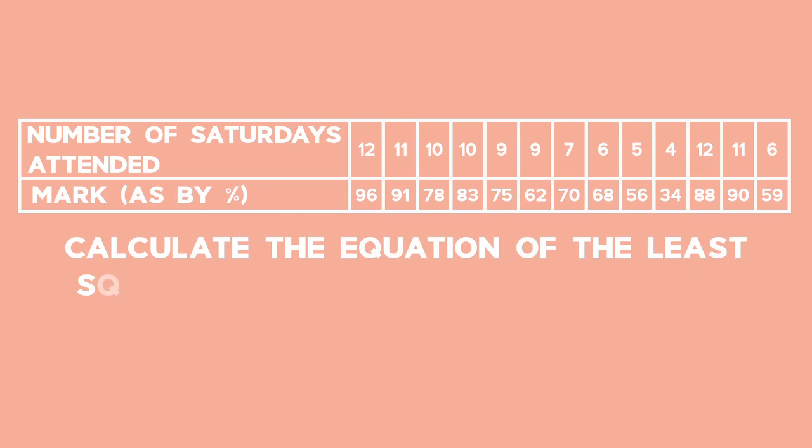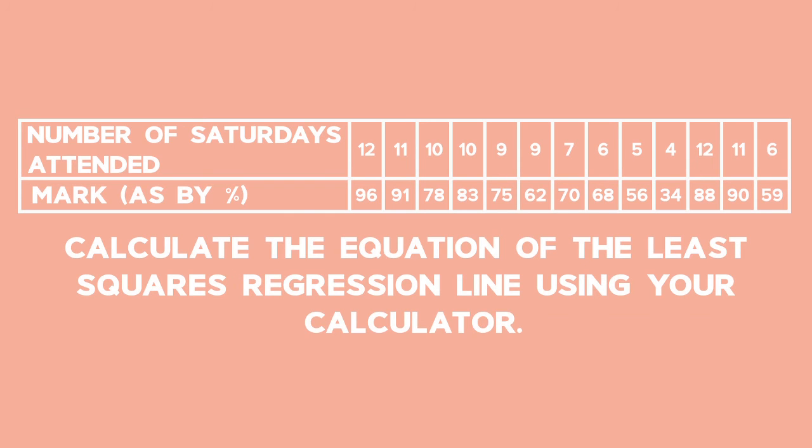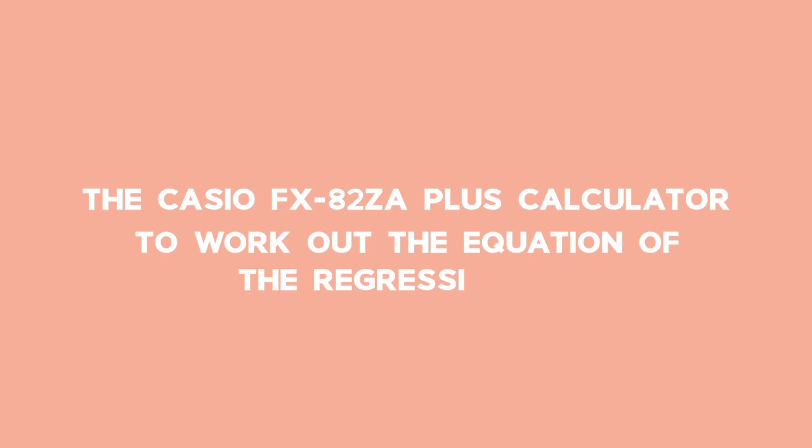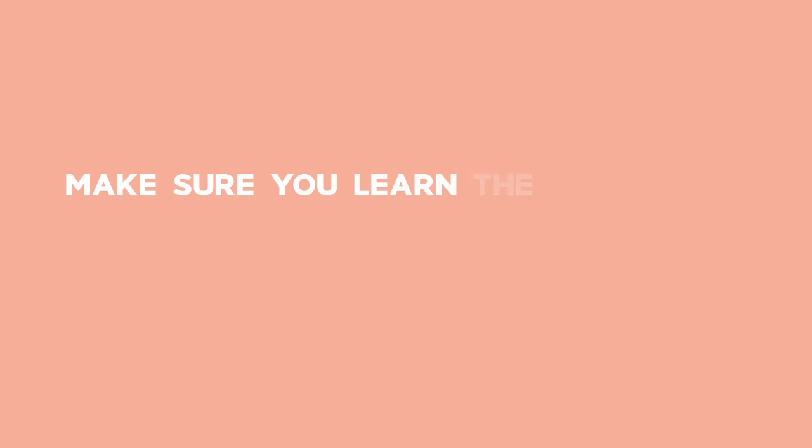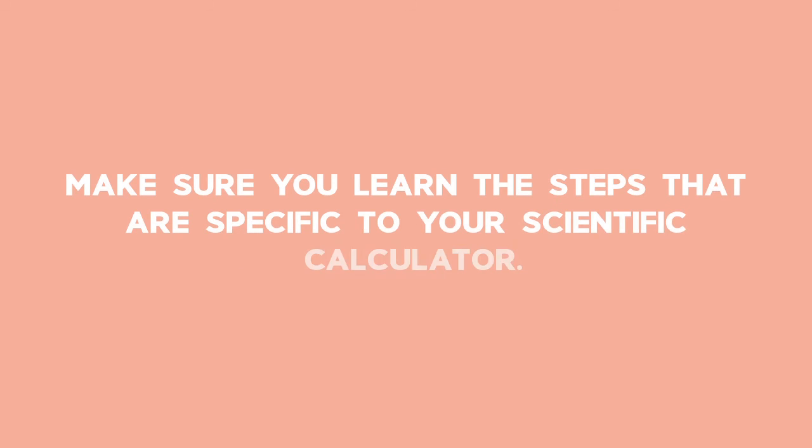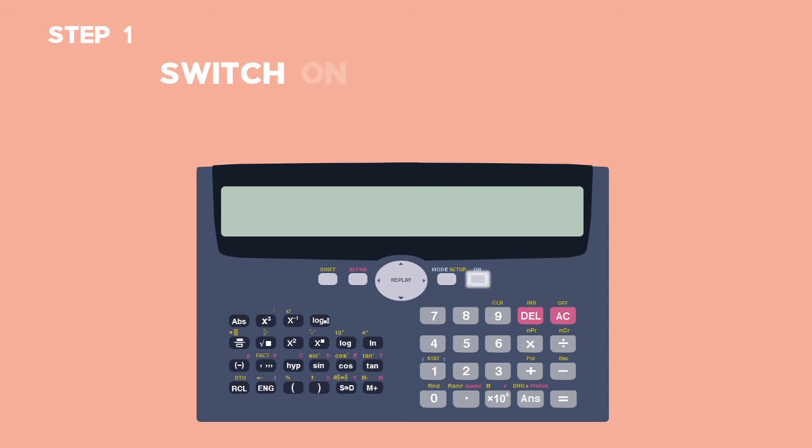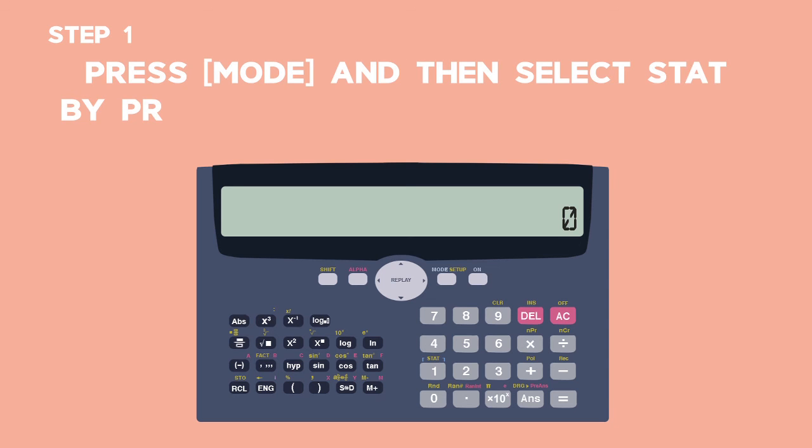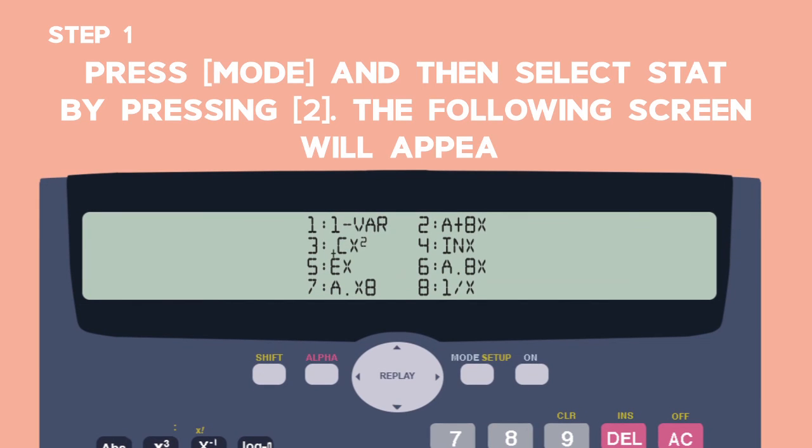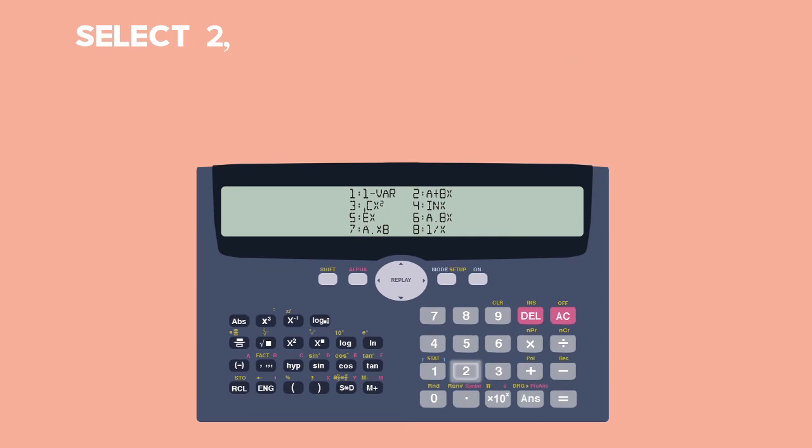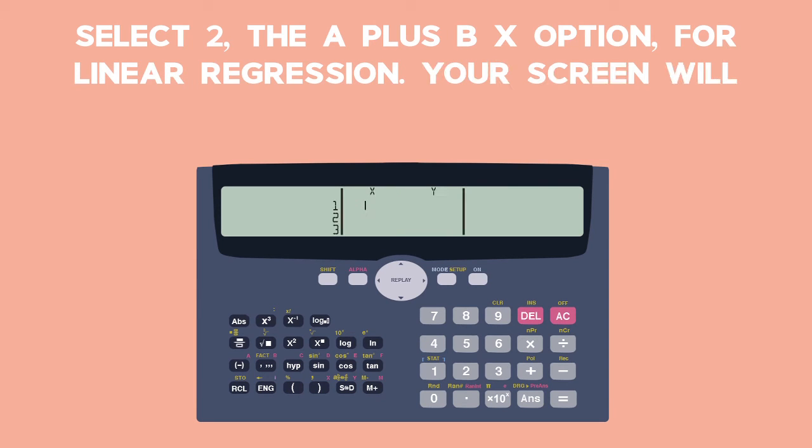Calculate the equation of the least squares regression line using your calculator. We are going to use the Casio FX82ZA plus calculator to work out the equation of the regression line. Make sure you learn the steps that are specific to your scientific calculator. Step 1. Get your calculator ready. Switch on the calculator. Press the Mode button and then select Stat by pressing Option 2. The following screen will appear. Select 2. The A plus Bx option for Linear Regression. Your screen will look like this.